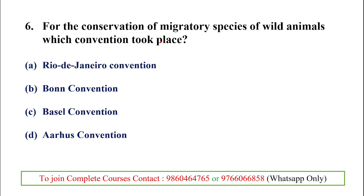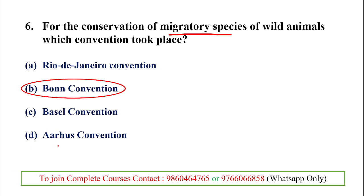The next question relates to the conservation of migratory species of wild animals. Migratory species are dynamic in nature — they do not reside in a particular habitat or place. For these migratory species, conservation is essential. The convention related to this is the Bonn Convention, which addresses the conservation of terrestrial, marine, and avian migratory species throughout their range.